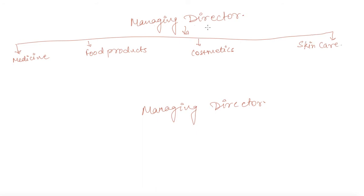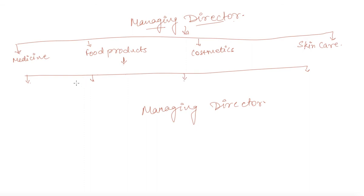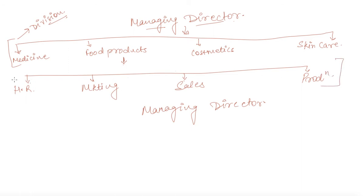Here we see that one organization is producing so many varieties of products. In the food product division itself, it is performing all the functions — one division is performing so many functions. So this is the division, and the functions they are performing include human resource management, marketing management, sales department, production department, etc. We can see that a single division, the food product division, is engaged in functioning in so many areas. This is the functional structure.